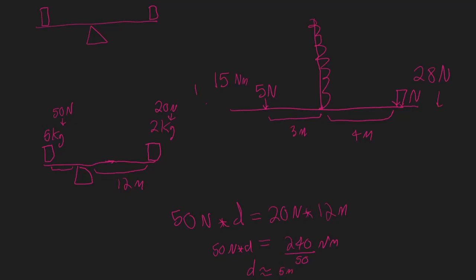We could say that this distance is roughly 5 meters. On a multiple choice question, we'd expect the answer to be between about 4.7 and 5. This is how you solve a problem like this — this is the concept of levers and the concept of torque on the MCAT.